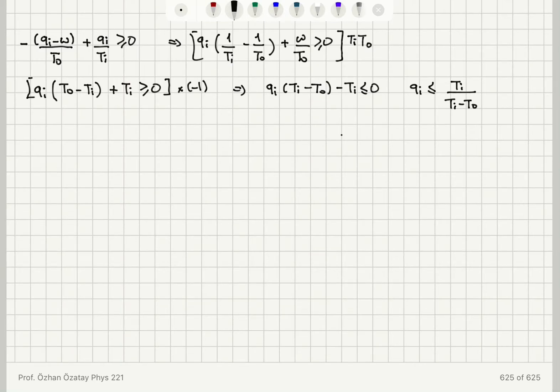I have forgotten the W here. So where did W go? If I multiply this by T I T zero divided by W, this would be Q I divided by W here, and then this would be plus T I. So this is Q I divided by W. Therefore, I would find that Q I is less or equal to T I over T I minus T zero multiplied with W.